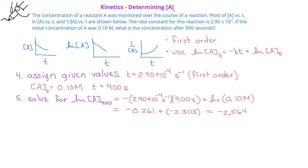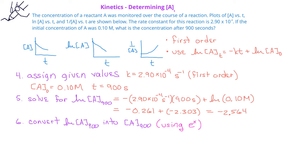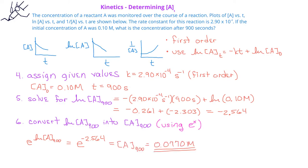When we read the problem, we see that we are looking for the concentration of A after 900 seconds, not the natural log of the concentration. Therefore, we need to convert the value for the natural log of the concentration into the concentration. You should recall from algebra that the inverse function of the natural log is the exponential function e. In order to get the concentration after 900 seconds, we take e raised to the natural log of the concentration at 900 seconds. So the concentration is equal to e raised to the negative 2.564 power, and when we enter that in our calculators, we see that the concentration after 900 seconds is 0.0770 molar.